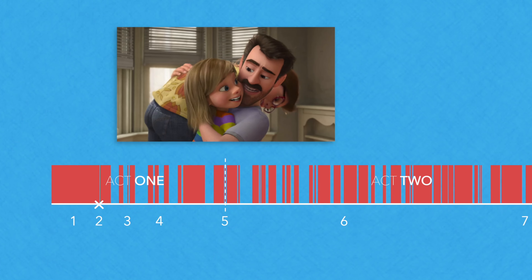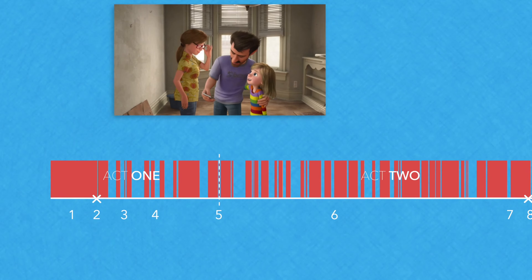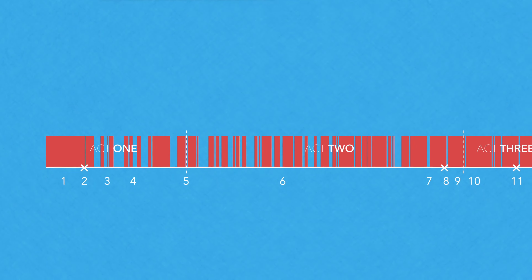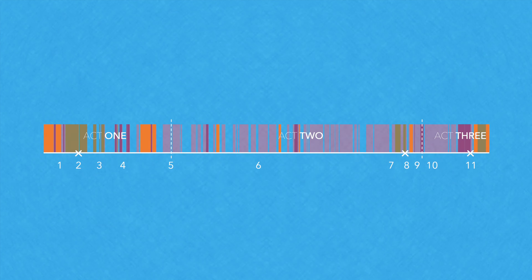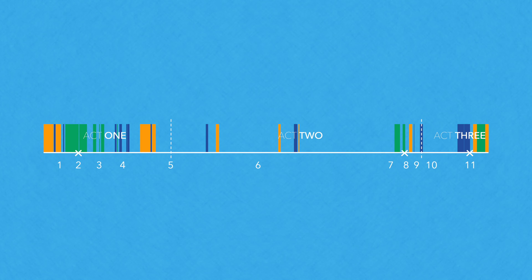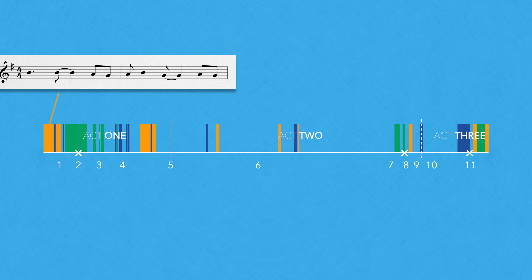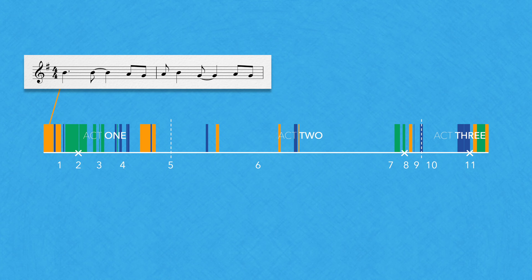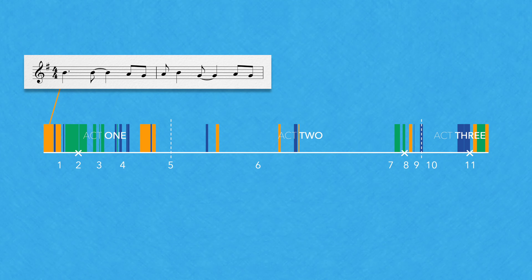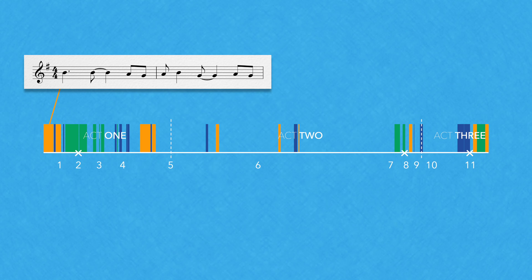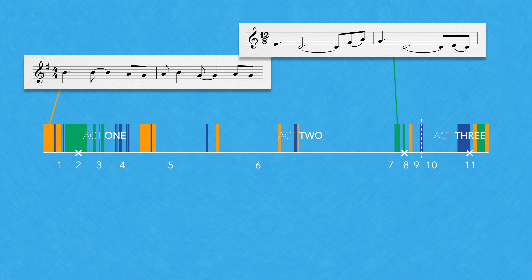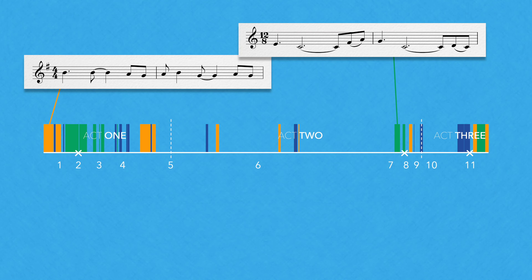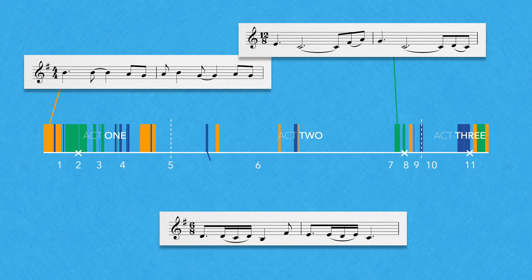But for the most part, the sound world is built around Michael Giacchino's score. So let's break this score down. The music contains multiple ideas, but there are three themes which can be considered primary material: the main theme, Joy's music; a secondary theme; and Sadness' theme.